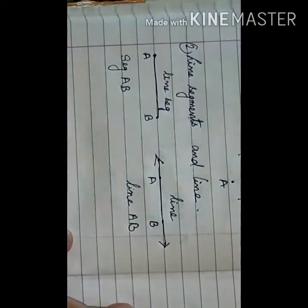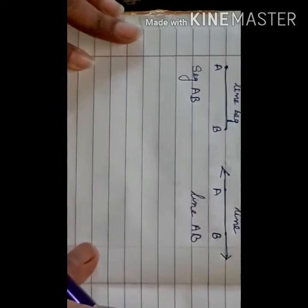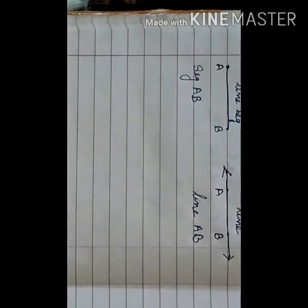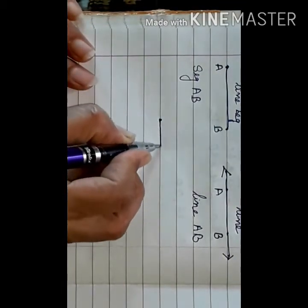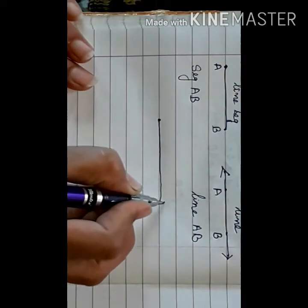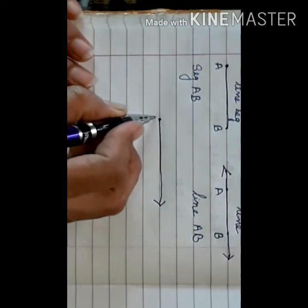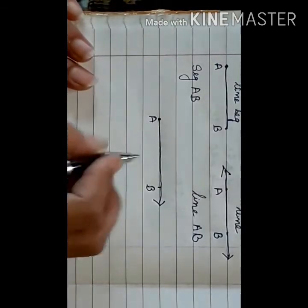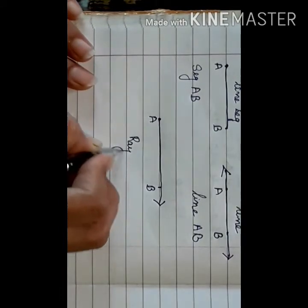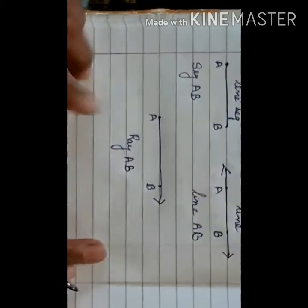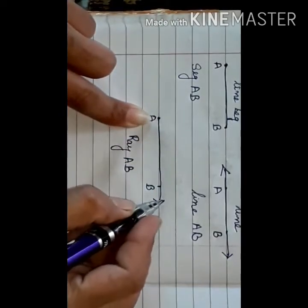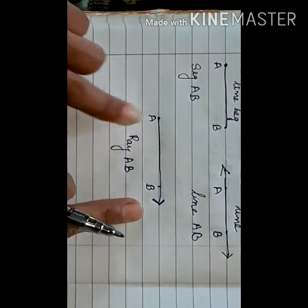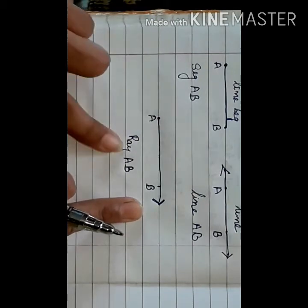The next concept is ray. A ray is a combination of a segment and a line. When the line starts from a point and keeps extending with an arrow, such a line is said to be a ray. Ray AB starts from A and keeps on extending, denoted by an arrow.